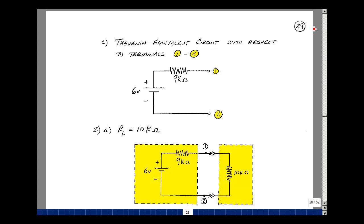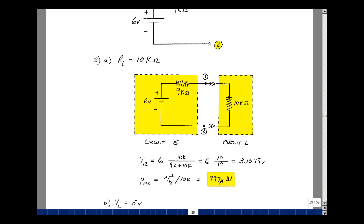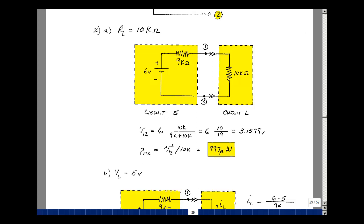Taking this fairly complicated circuit, replaced it by just two elements, and now we can analyze a much simpler circuit. Put a 10k load here. Find the power in the 10k resistance. A lot of ways you could do that. Could use a voltage divider to find the voltage, since they share the same current. 6 volts times 10k over 10k plus 9k is the voltage across terminals 1 and 2, which is the terminals of the 10k resistor. 6 times 10 over 19 is 3.1579 volts. Power is v squared over r. Get 997 microwatts.